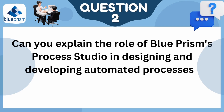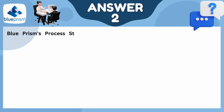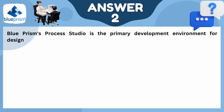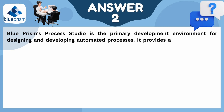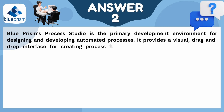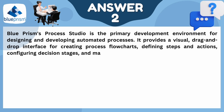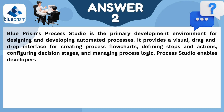Can you explain the role of Blue Prism's Process Studio in designing and developing automated processes? Blue Prism's Process Studio is the primary development environment for designing and developing automated processes. It provides a visual drag-and-drop interface for creating process flowcharts, defining steps and actions, configuring decision stages, and managing process logic. Process Studio enables developers to design end-to-end automation workflows.